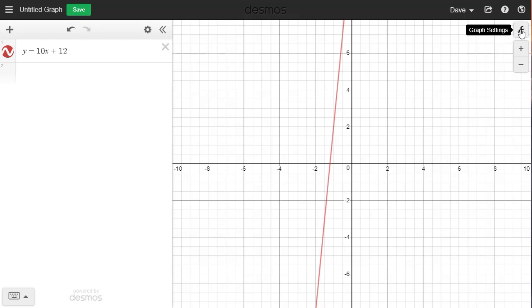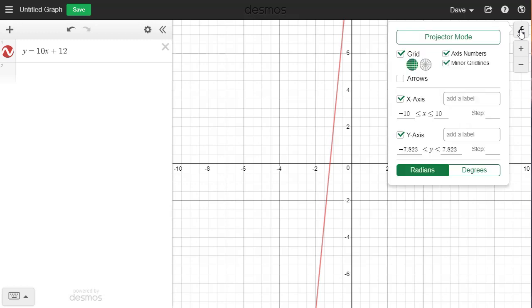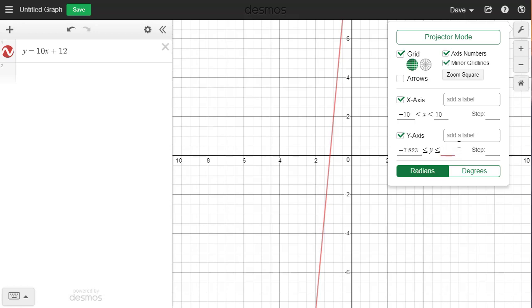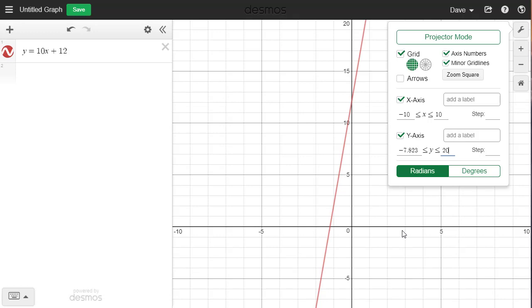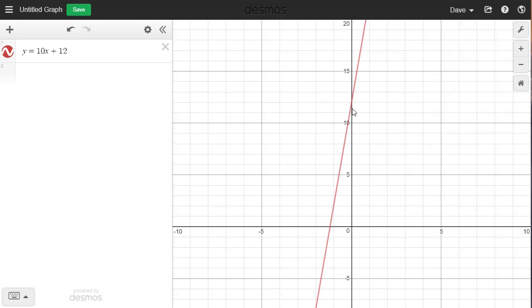And I'm going to tell it instead of going up to 7.823, I'm going to tell it to go up to 20. When I click outside of that box, I can now see that I've included 20 here.